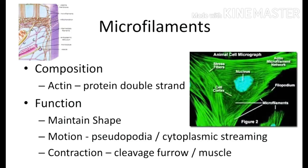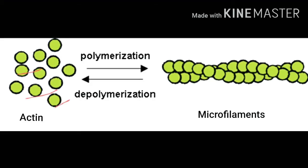The first type of cytoskeletal structure is microfilaments. These microfilaments are long narrow protein filaments which are present in eukaryotic plant and animal cells. These microfilaments are made up of a type of protein called actin. As you can see in the diagram, these actin proteins first get polymerized and form a chain, and the two chains of this actin protein then get arranged in a helical form.